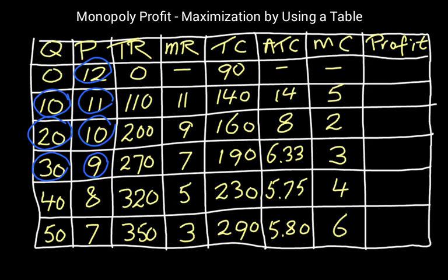What that means is that we have to figure out the total revenue. Total revenue is price times quantity. And then we can also figure out marginal revenue. Now notice that marginal revenue, except for the first value at 11, marginal revenue is not the same as the price anymore for a monopolist.